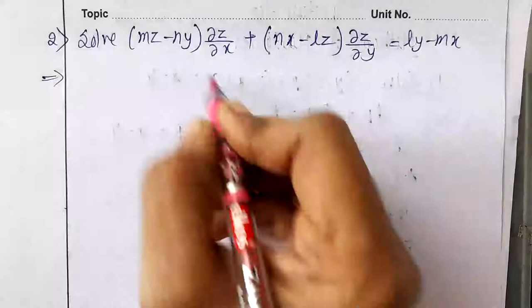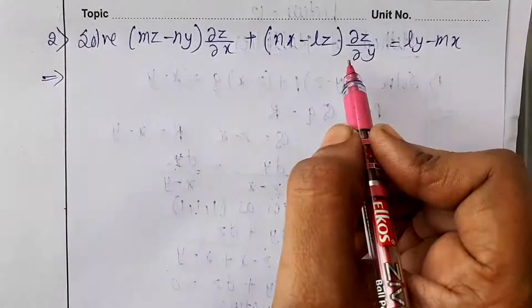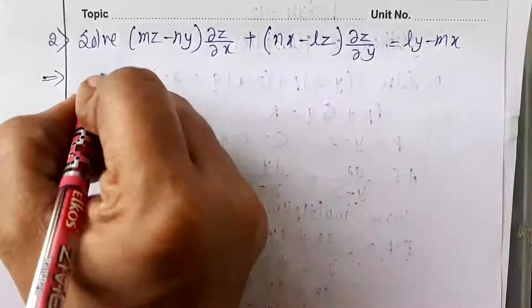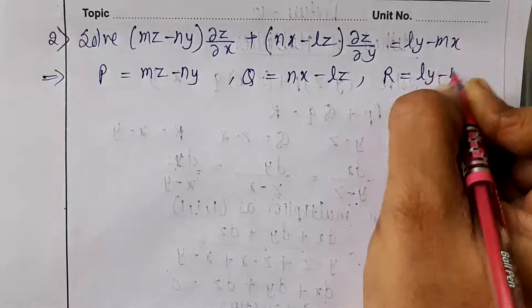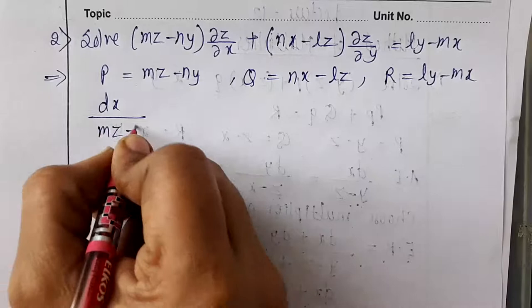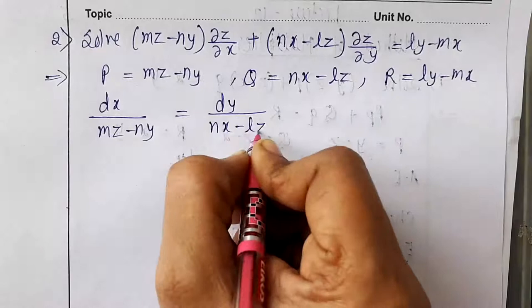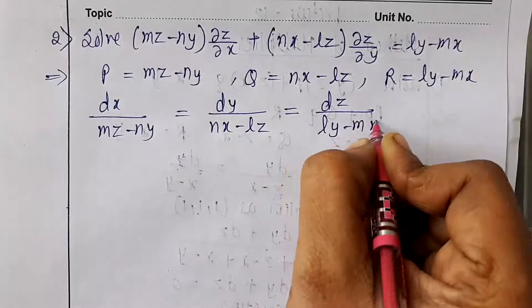The second example: solve (mz − ny)p + (nx − lz)q = ly − mx. Here P = mz − ny, Q = nx − lz, and R = ly − mx. So the auxiliary equation is dx/(mz − ny) = dy/(nx − lz) = dz/(ly − mx).